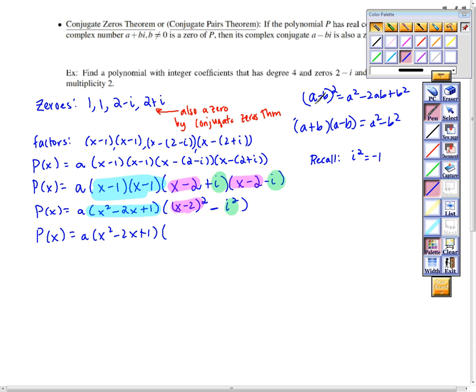a minus b squared is a squared minus 2ab plus b squared. So x squared minus 2x times 2, so minus 4x plus 4, minus i squared is negative 1, so minus negative 1. So P of x is a times x squared minus 2x plus 1 times x squared minus 4x. Notice right here I have a minus and negative 1, this part right here is a plus 1. So minus 4x plus 5.